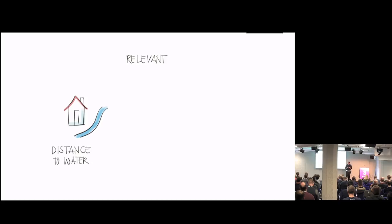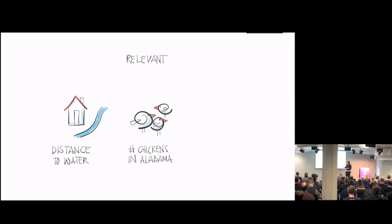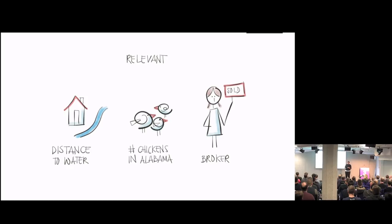There are basically three good rules for what kind of data to gather. First, it has to be relevant — data that actually tells you something about the problem. How far away from water my house is? Relevant. Number of chickens in Alabama at the day of the sale? Maybe not. Some are uncertain — like whether the broker is important for the sale — because you don't know cause and effect. Maybe brokers just pick more expensive houses and don't actually make houses more expensive.